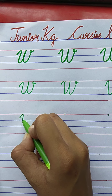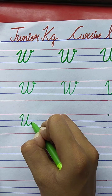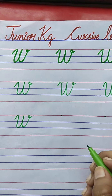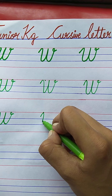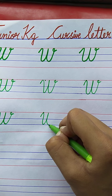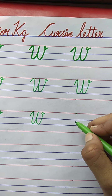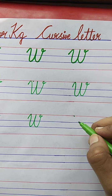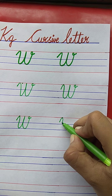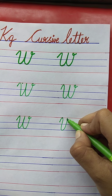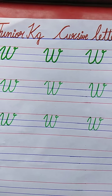Again — write with me. W for Watch. Curve, slanting line, curve, slanting line, one more curve, slanting line, and loop. W for Watch. Very good. The spelling of Watch: W-A-T-C-H.